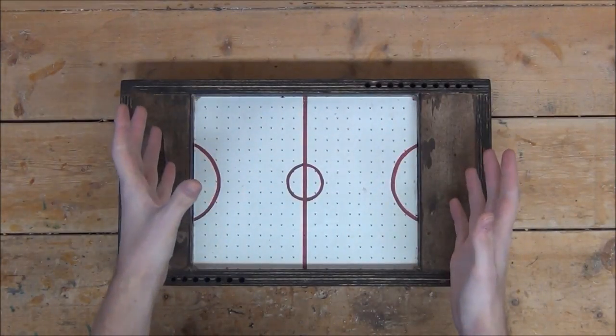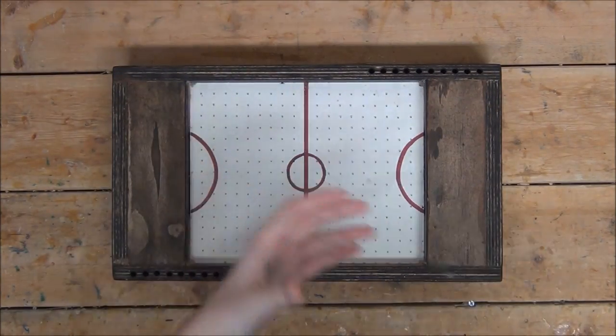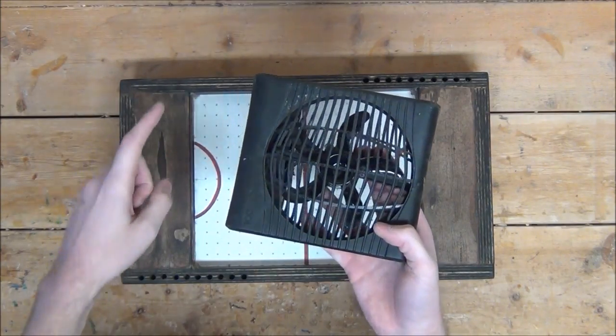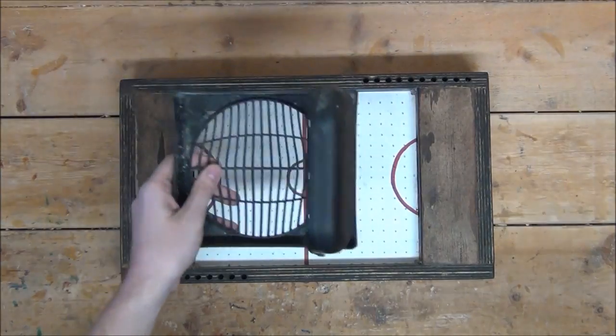Now on to the powerhouse of the air hockey table, aka the fan. The fan that I'm going to use is a cheap Walmart fan that's rated for about 5 or 6 volts. And all we really need from this fan is the fan itself and the back plate, so after we unscrew that, we can throw the rest away.